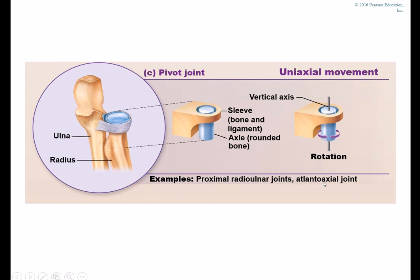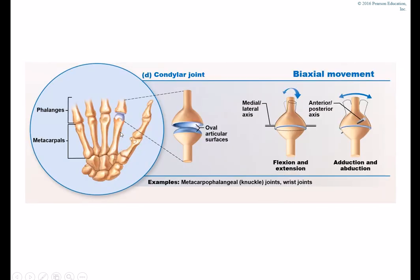Pivot joints are also uniaxial, producing rotational movement. The best example is the atlantoaxial joint between the first two vertebrae. Think of a bone inside a little sleeve — the sleeve is a bone or ligament, and the axle is a rod-shaped or rounded bone. The proximal radioulnar joint is another example: the axle is the radius, and the sleeve is the annular ligament, so the radius pivots and rotates inside this ligament.